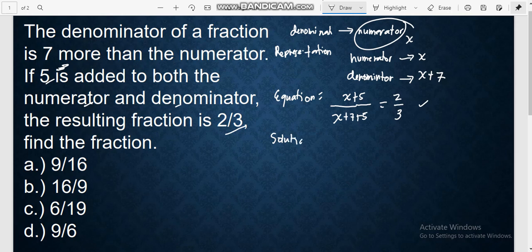Let's proceed to the solution. You cross-multiply. That is 3 times x plus 5, 2 times x plus 7 and 5, that is 12. You will have 3x plus 15 and 2x plus 24. You have 3x minus 2x and 24 minus 15. This is already x and you will have 9.